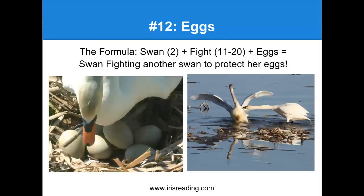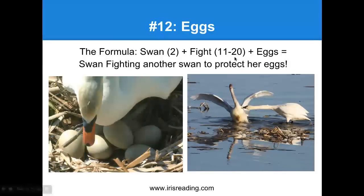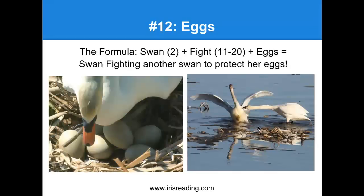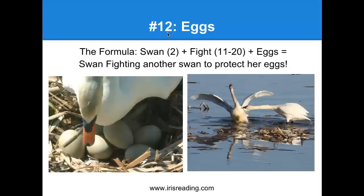Number 12 uses the same formula. We start with number two, which is a swan, then add a fight, and we know we've got to get eggs. Swan plus fight plus eggs — the visualization: a swan fighting another swan to protect her eggs. The way we'll remember this later: we'll think of 12, then two is a swan — but it's not milk because we know there's a fight involved. Oh yeah, there were two swans fighting over whose eggs they were — maybe each one saying 'I'm the baby's mama.'